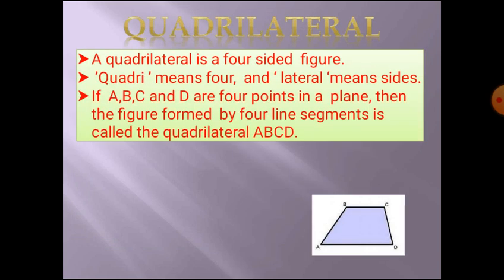Next, quadrilateral. A polygon which is made up of four sides is called a quadrilateral — it is a four-sided figure. Quadri means four and lateral means sides. If A, B, C, D are four points in a plane, the figure formed by the four line segments AB, BC, CD, and DA is called quadrilateral ABCD.